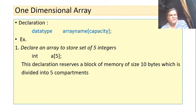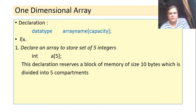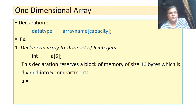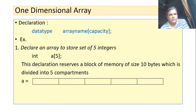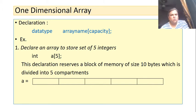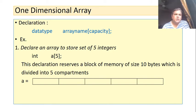What happens when we declare an array like this? It will create a variable — array variable — whose name is A, by reserving a block of memory of size 10 bytes. This 10-byte memory block is divided into five compartments. The size of array A is always calculated as capacity multiplied by the size of the data type: in our case, 5 × 2 bytes (for int) = 10 bytes.